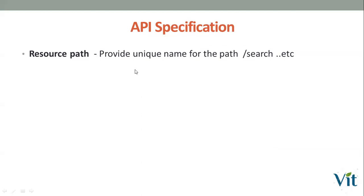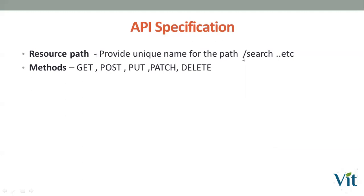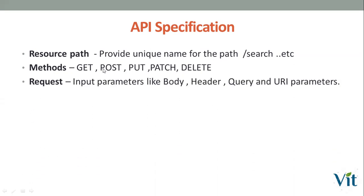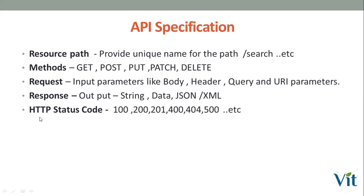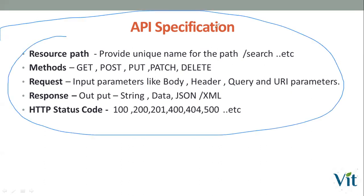In an API specification, the first thing is resource path — you need to provide a unique name. Then you select a method: GET, POST, PUT, PATCH, or DELETE. Next is the request — the input — which can be passed via four ways: body, header, query parameters, and URI parameters. Then the response — you get JSON or XML. Finally, HTTP status codes tell you whether the API succeeded or failed. If you remember these five points, you can design any API.